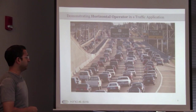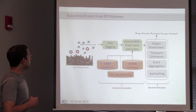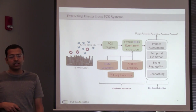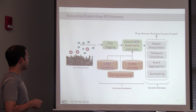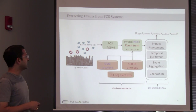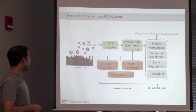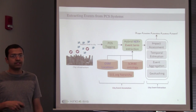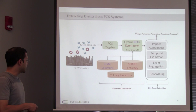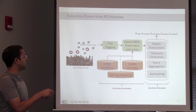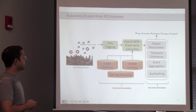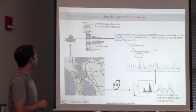Let's take traffic as an example. With PCS systems, we need to first extract events from different modalities — for example, sensor modalities and textual modalities. This is an example where we use textual data to extract city-related events. We use 511.org, which is a traffic data aggregating service in the San Francisco Bay Area, to annotate textual data, and we use some algorithms to extract textual events. The question is: what is the horizontal operator here?